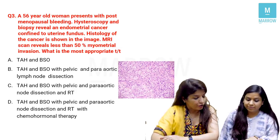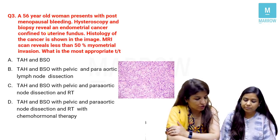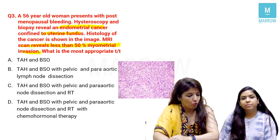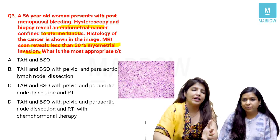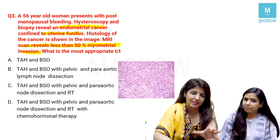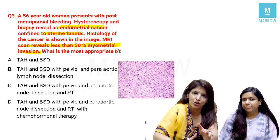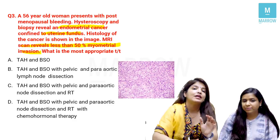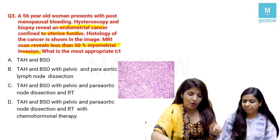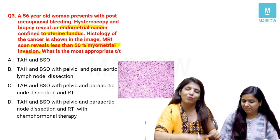Third question: A 56-year-old woman presents with post-menopausal bleeding. Hysteroscopy and biopsy reveal endometrial cancer confined to the uterine fundus. MRI reveals less than 50% myometrial invasion. What is the most appropriate treatment? Even though we know it is endometrial cancer, we must still examine the slide before jumping to management. This slide looks very different from what we saw in the previous questions.